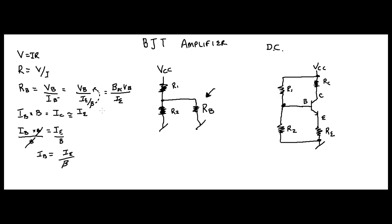So think about it. Beta is a relatively large number. It could be 100. So 100 times this value of VB over IE, that's going to give you your input resistance. So if we have an example, why don't we just do an example.